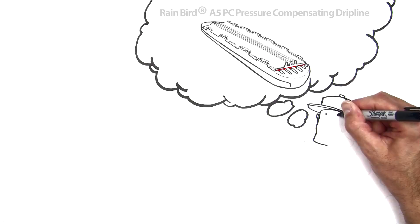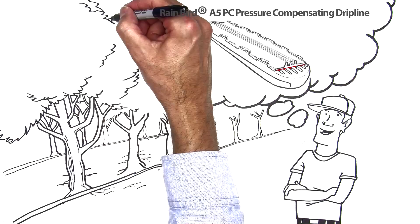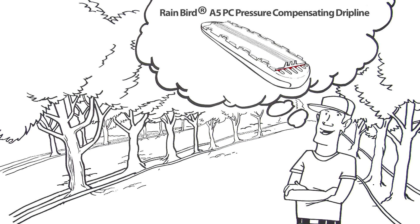The perfect emitter for your orchard. Designed and built the way you would do it. Ask your dealer about A5PC Dripline from Rainbird.